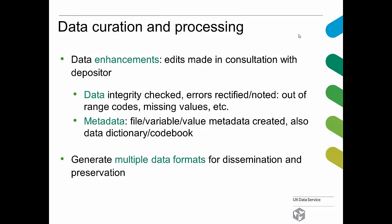When the quality assessment and the disclosure review is complete, we then move on to the main stage of data curation and processing. We will look at whether we need to make any enhancements to the data, and as mentioned, we do this in consultation with the depositor. We will look at data integrity — we may find errors which we need to rectify or note if no solution is available. We might look at out-of-range codes, missing values, etc. If we don't have enough metadata or information on what those particular elements mean, we will go back to the depositor, get the information that we need, and add it to the data.